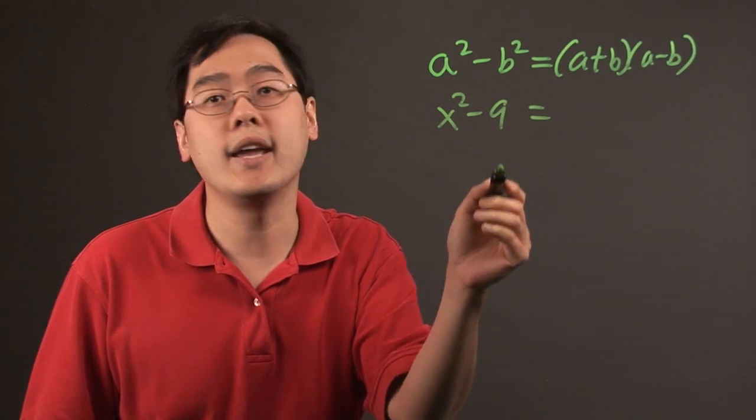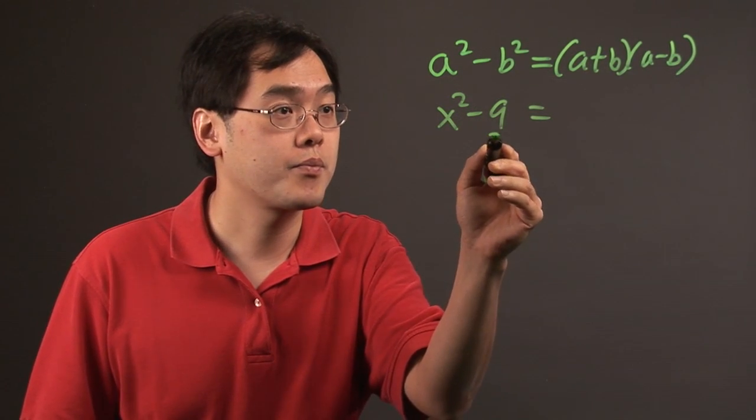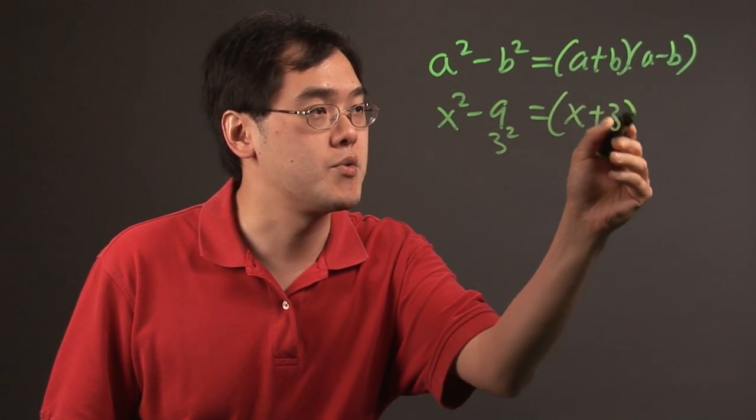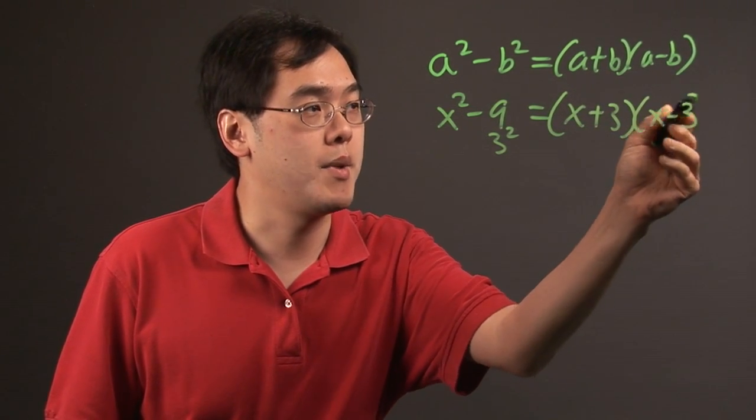x is squared, but 9 is considered 3 squared. This special case tells you that this can be factored very easily as x plus 3, x minus 3.